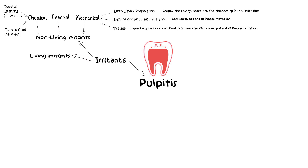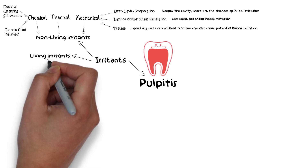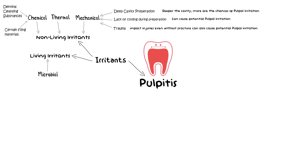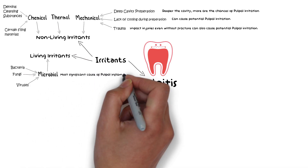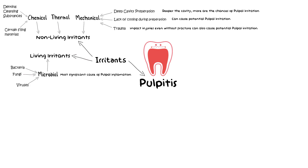The second category of irritants to the pulp are living irritants, which includes microbial irritants like bacteria, fungi, and viruses. Among all of these irritants, microbial irritants are the most significant cause of pulpal inflammation, because microorganisms such as those present in dental caries can cause serious irritation to the pulp and cause pulpal necrosis — a topic which we have already discussed in detail in our previous lecture on endodontic microbiology.